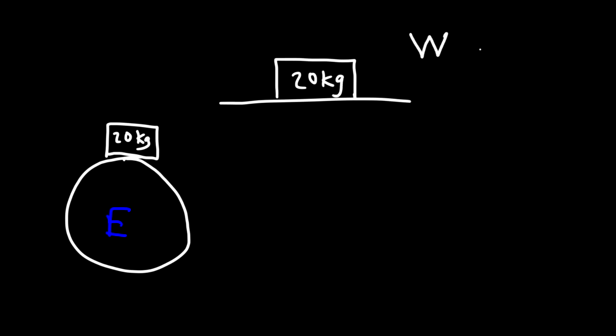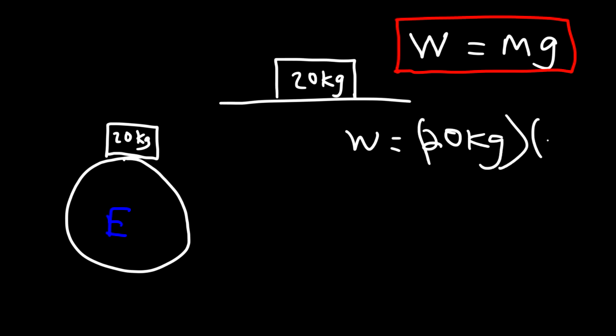The weight force is simply the mass times the gravitational acceleration. So it's going to be the mass of the block, which is 20 kilograms, times the gravitational acceleration of 9.8 meters per second squared. So 20 times 9.8. That gives us a weight force of 196 newtons.